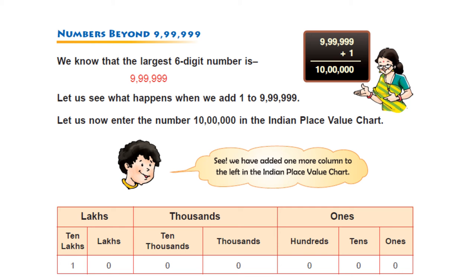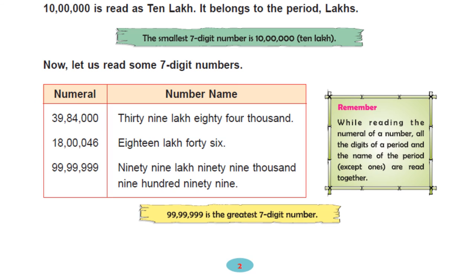What is the number behind 9,99,999? We know that the largest six-digit number is 9,99,999. Let's see what happens if we add 1 to 9,99,999. We enter the number in the Indian place value chart — we have added one more column to the left. We read it as 10 lakh. It belongs to the period 'lakhs.' The smallest 7-digit number is 10 lakh.